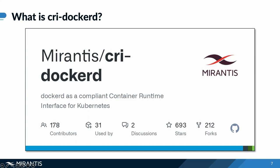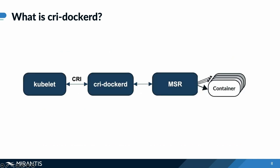CRI Docker D is an adapter that lets Kubernetes use Docker as its container runtime, acting as the bridge and leveraging the full suite of Docker functionality. When the Kubelet needs to run a pod, it communicates with CRI Docker D, which then translates the CRI commands into Docker commands to be used by the Docker engine or the Mirantis container runtime — MCR — allowing Kubernetes to interact with Docker just like it would any other CRI-compatible runtime.